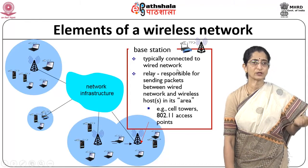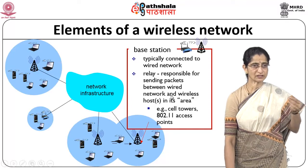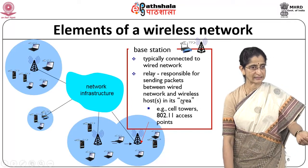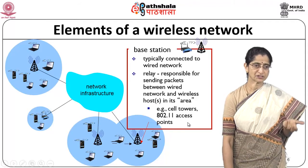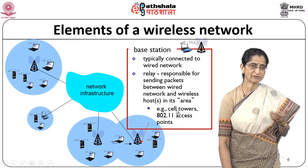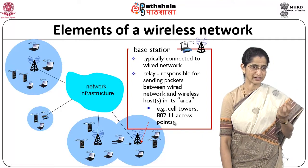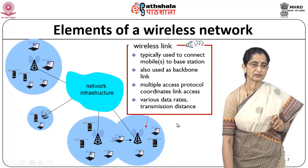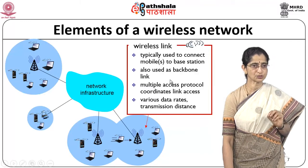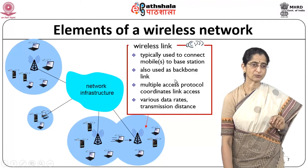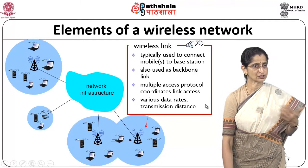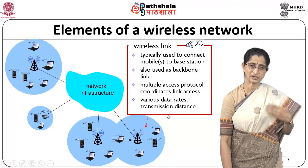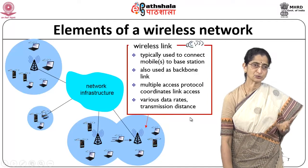Base stations are typically connected to a wired network and are responsible for sending packets between the wired and wireless networks. Examples include cell towers and 802.11 access points. We also have wireless links, which connect mobile devices to base stations. A multiple access protocol is used to coordinate access, and data rates depend on factors like transmission distance.